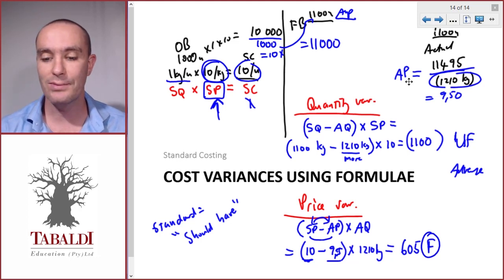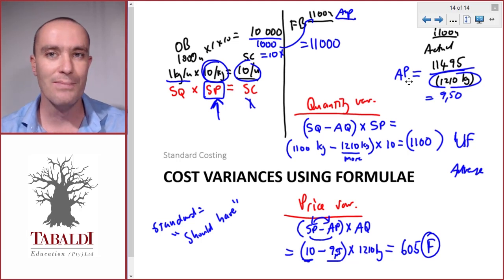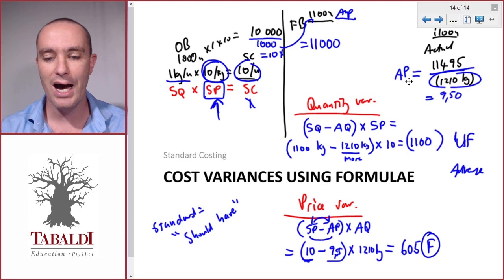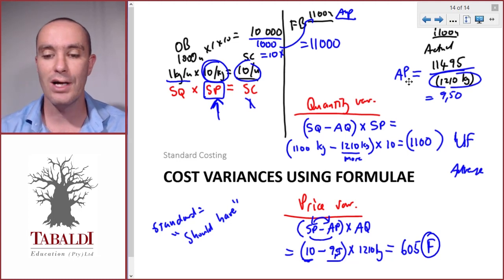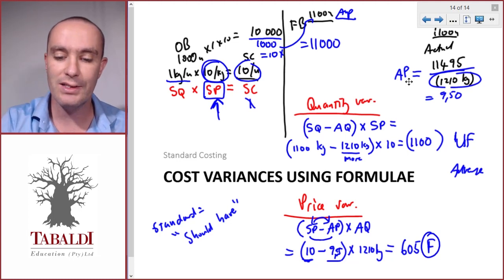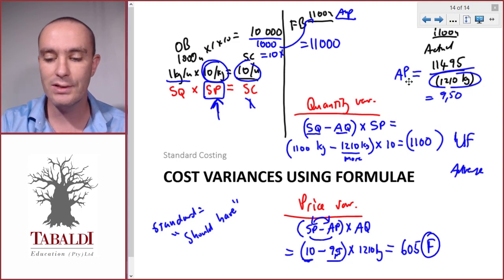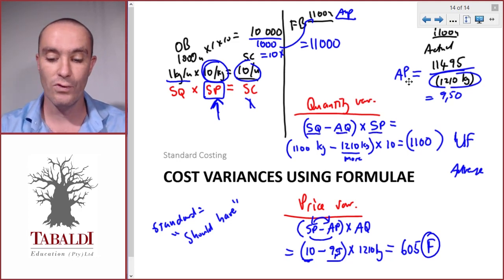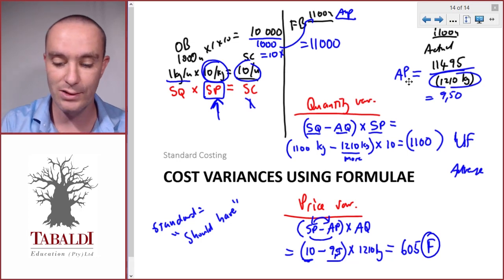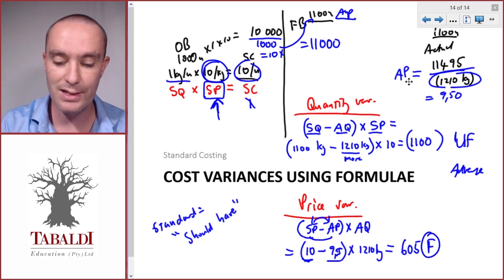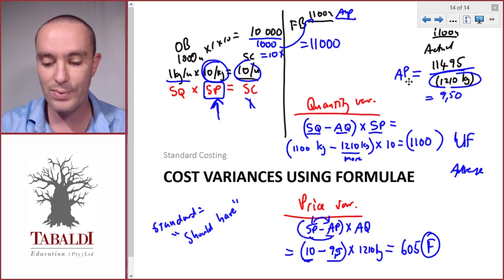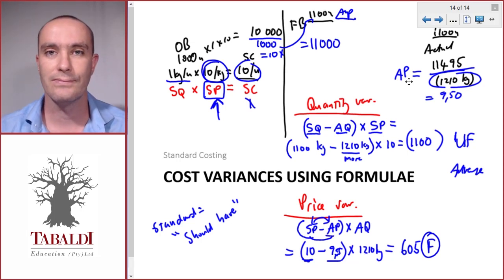The quantity and price variances calculated using formulas match the answers from the table exactly — the same numbers used the same way. For labor and variable overheads, the formulas are identical: quantity variance = (standard quantity − actual quantity) × standard price; rate variance = (standard price − actual price) × actual quantity.